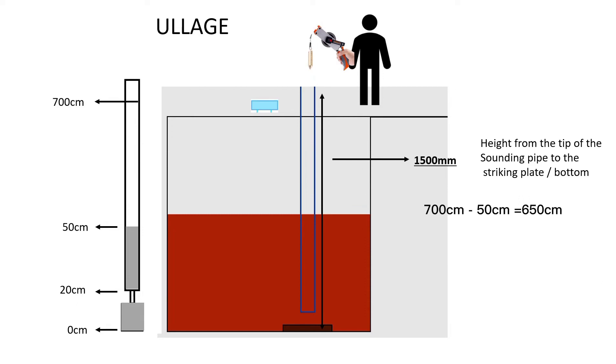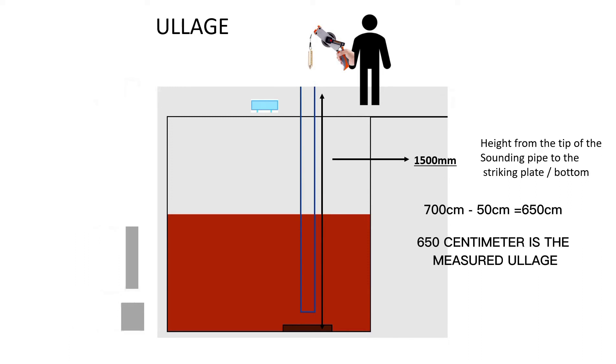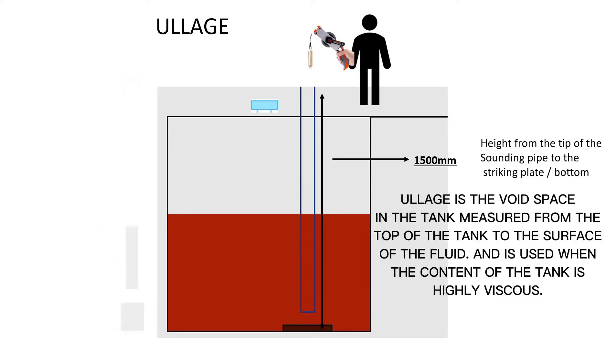To calculate for ullage value: roll down value subtract by measured value. 700 minus 50 equals 650. 650 centimeter is the measured ullage. Ullage is the void space in the tank measured from the top of the tank to the surface of the fluid and is used when the content of the tank is highly viscous.